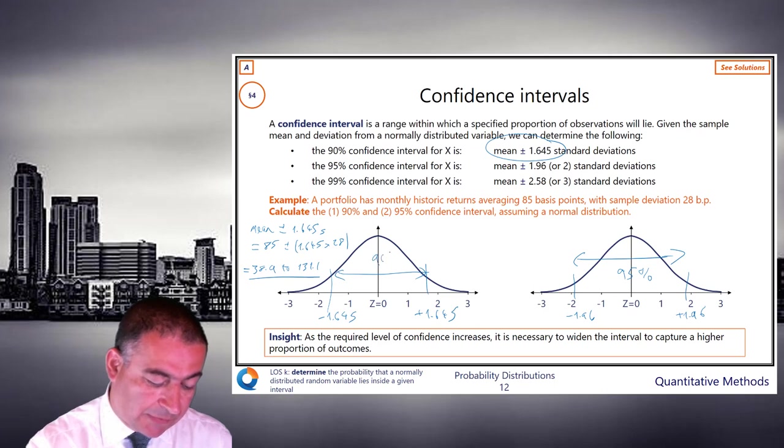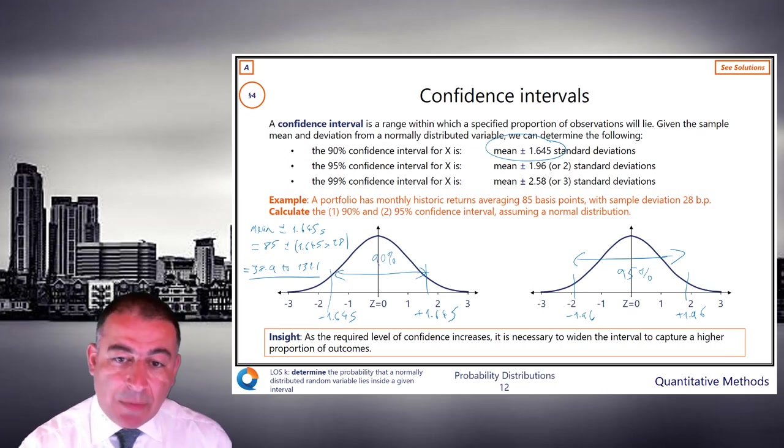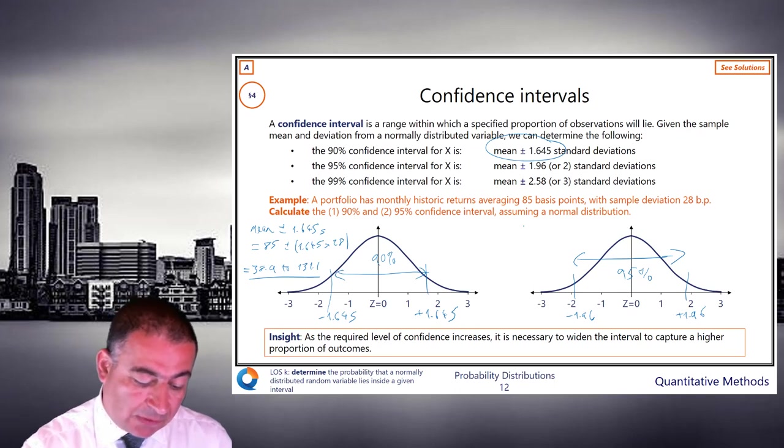And so here, it's the same idea. So 95% confidence interval is mean. I'm just going to write out the answer here.